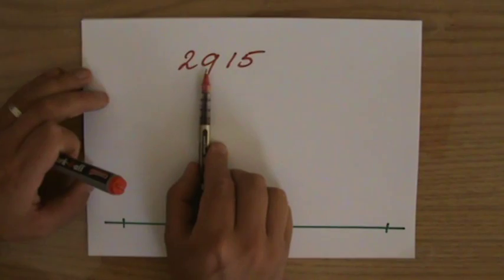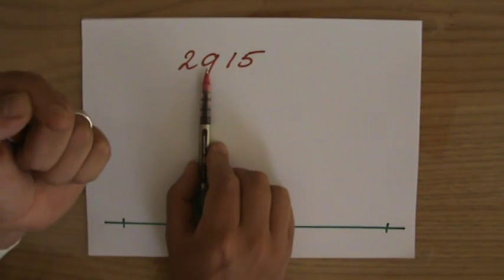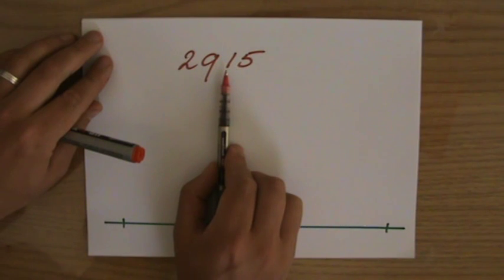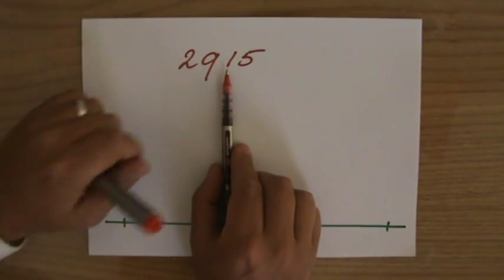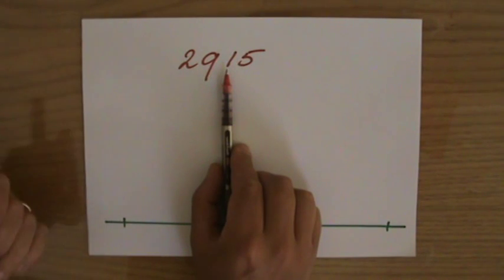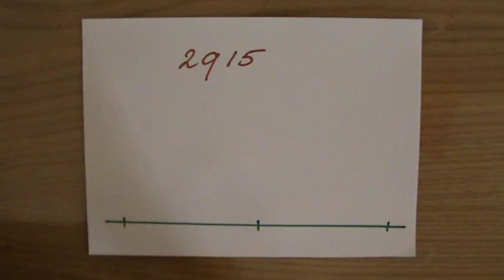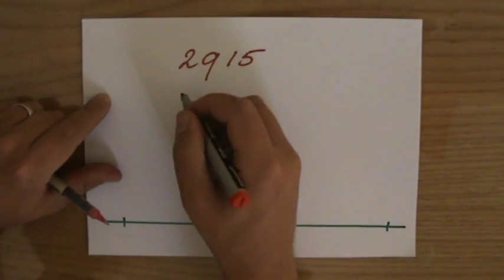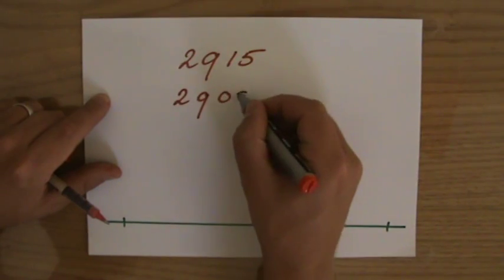So the 9 either stays a 9, or it goes up to a 10, and that depends on the next number. Is it a 5 or higher? Then the 9 goes up to a 10. If it's lower than a 5, the 9 stays a 9. Now, it is lower than a 5, so this to the nearest 100 would be 2,900.